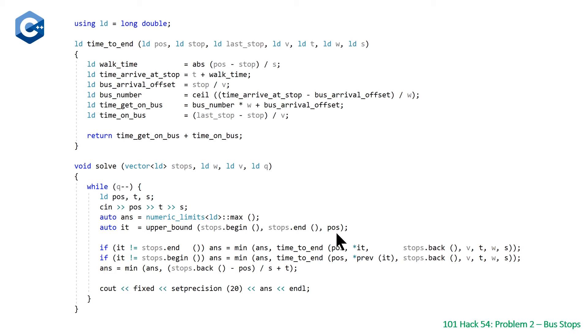Then we do our upper bound call, our binary search on the position that is given for each individual. Then we check to see as long as there's a bus stop to the right of this individual, we're going to make a call to time_to_end and pass in the value of that bus stop. Then we'll make another call to time_to_end if there's a bus stop to the left.